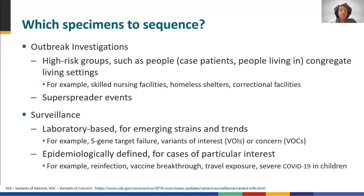In addition, epidemiological surveillance of COVID-19 cases can be of particular interest for sequencing — for example, cases of potential reinfection, vaccine breakthrough, travel exposure, or severe COVID-19 in children.